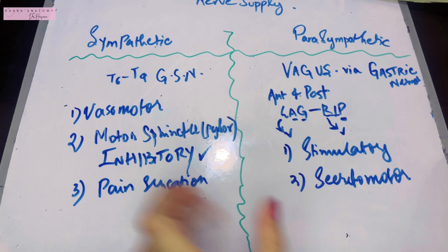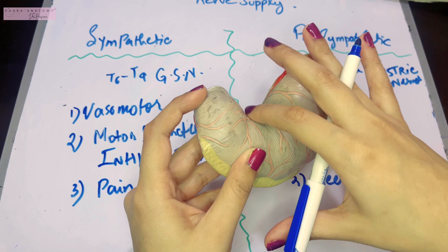Finally never forget that the lesser curvature is where mostly the peptic ulcers occur in the stomach, and the greater curvature is the common site for gastric carcinoma.